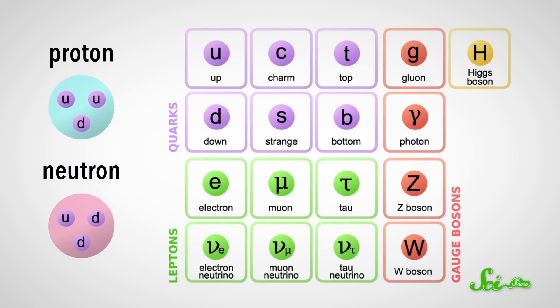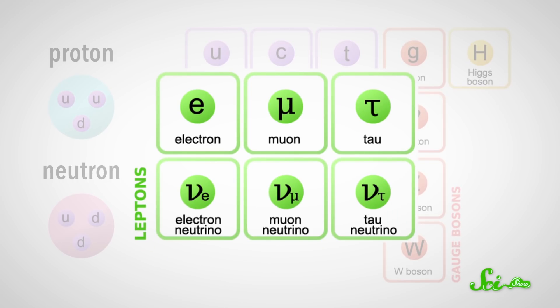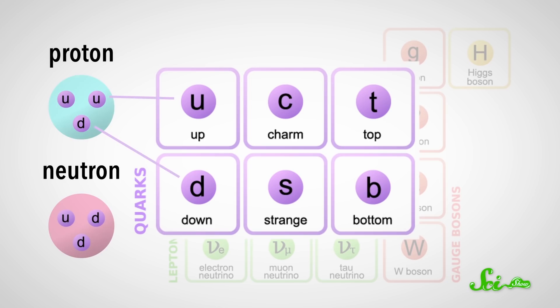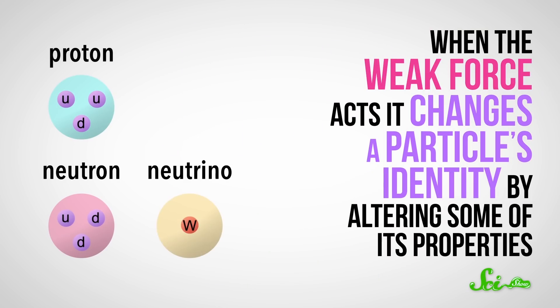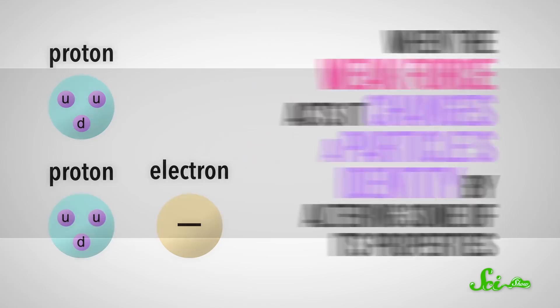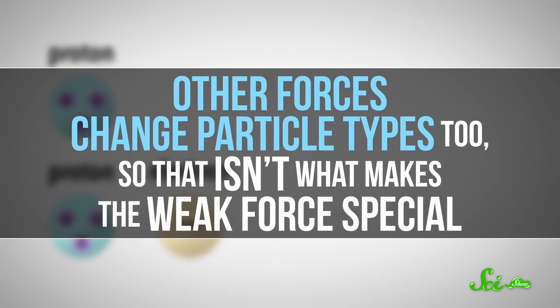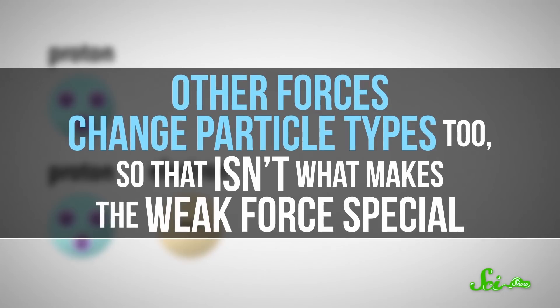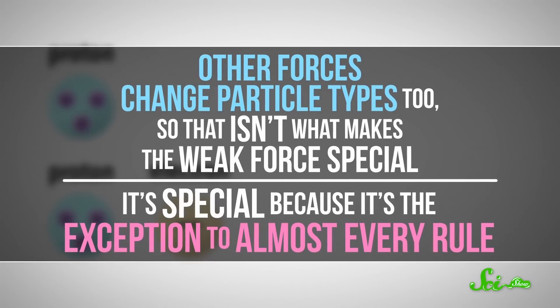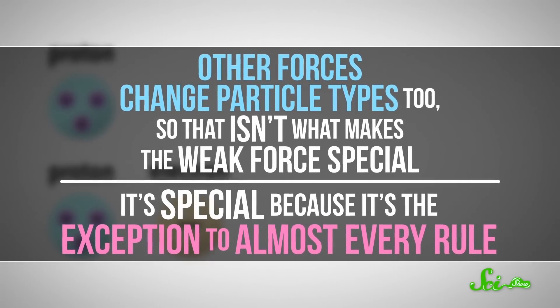Fundamentally, the weak force acts on leptons, which includes electrons, neutrinos, and their heavier cousins, and on the quarks that make up particles like protons and neutrons. When it acts, it changes a particle's identity by altering some of its properties. But other forces change particle types too, so that isn't what makes the weak force special. It's special because it's the exception to almost every rule.